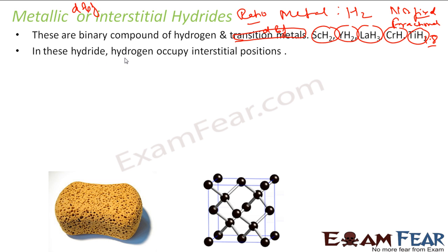In these hydrides, hydrogen occupies an interstitial position. Think of it as a sponge — ScH2 is like a sponge with holes, and hydrogen occupies that space. A lot of research is going on regarding the potential of interstitial hydrides to store hydrogen. The H+ ion is very small in size, so we leverage this feature to store hydrogen in these hydrides.